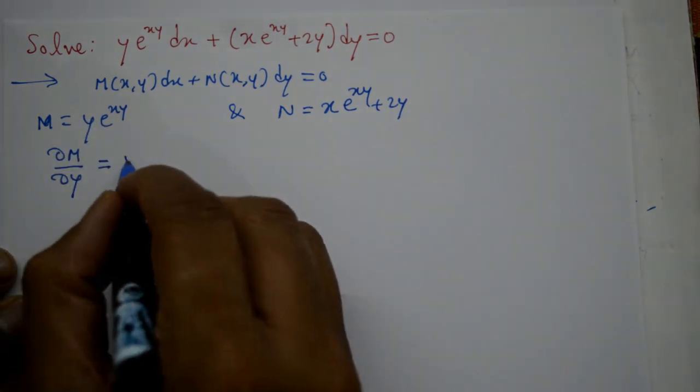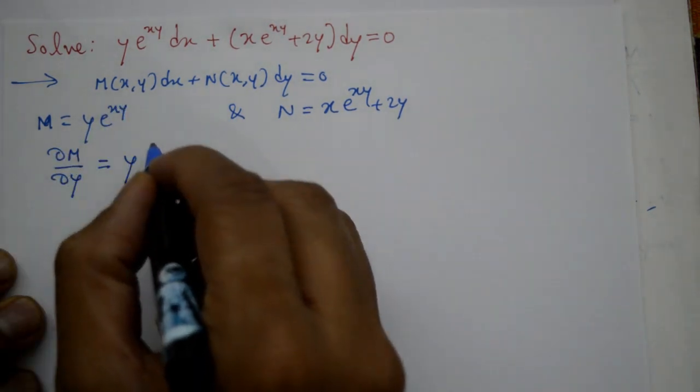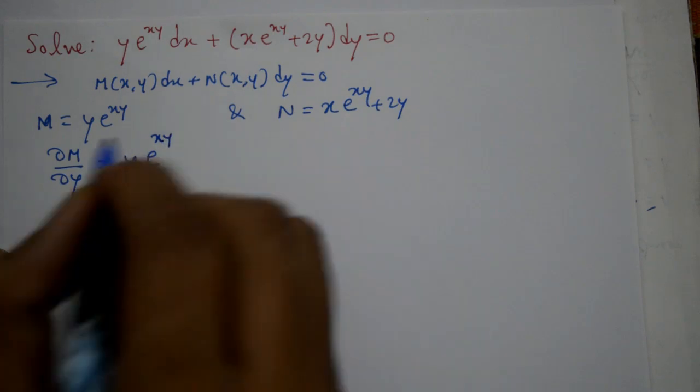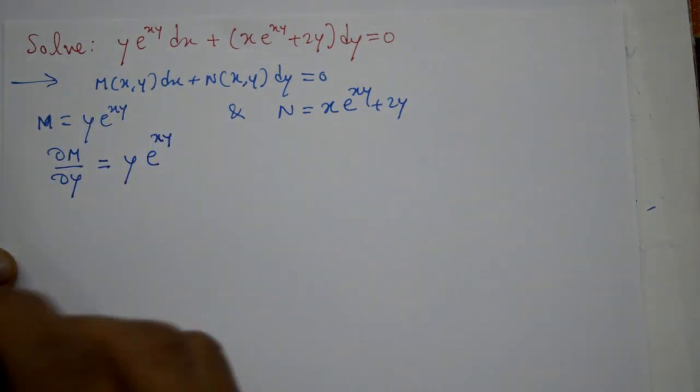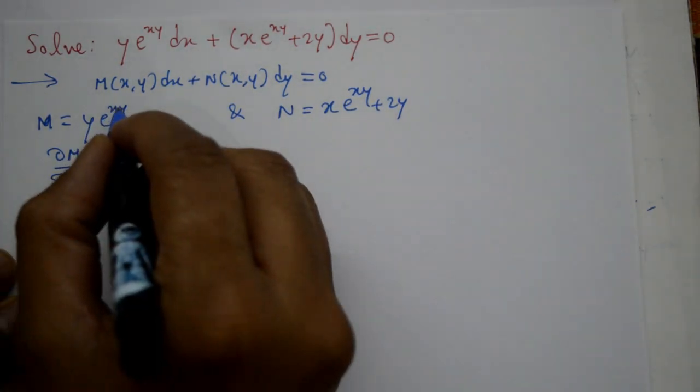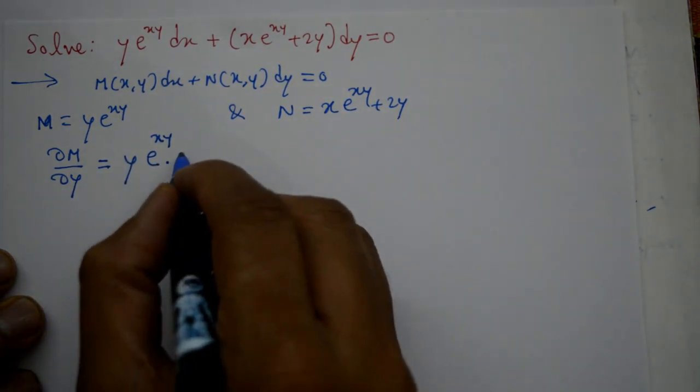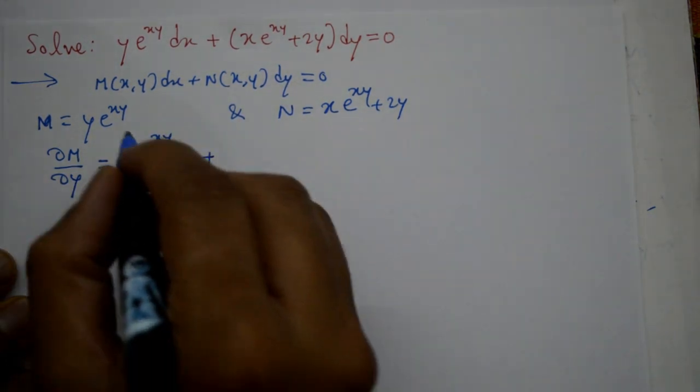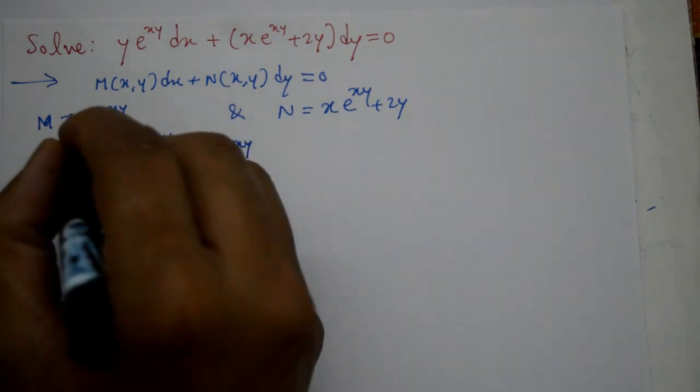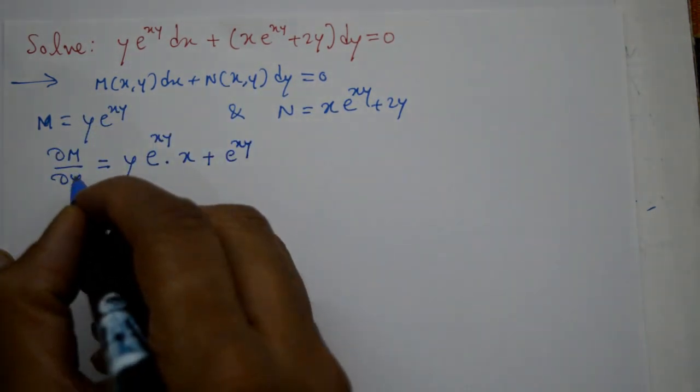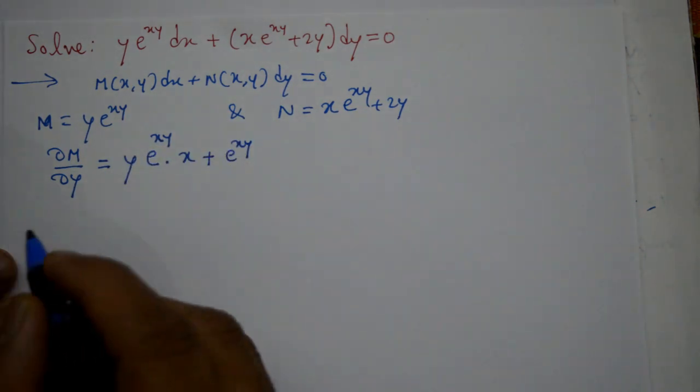So first y as is, we'll differentiate this, e to the power xy, then differentiate xy, but x is treated as a constant, so we get into x. Plus, e raise to xy as is, y differentiate with respect to y is one, e term comes. So del m by del y is equal to xe to the xy plus e to the xy.